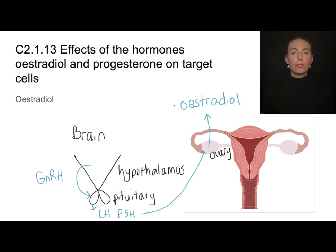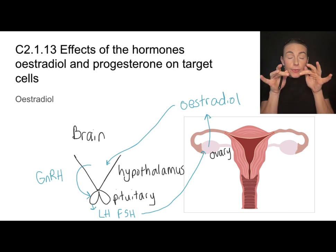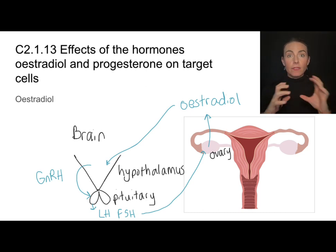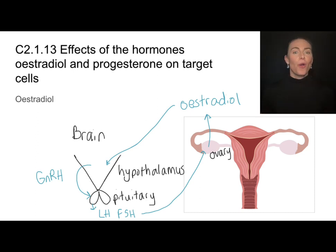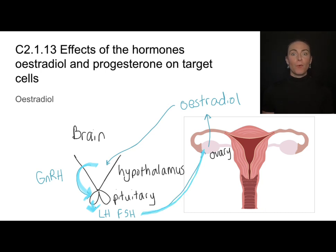Estradiol then travels to the cells of the hypothalamus, enters those cells, binds with a receptor, and goes directly into the nucleus of the hypothalamus cells. It causes more transcription and translation to take place, resulting in even more GnRH being produced, which results in more pituitary hormones, more follicular development, and more estradiol—and so this positive feedback cycle continues.